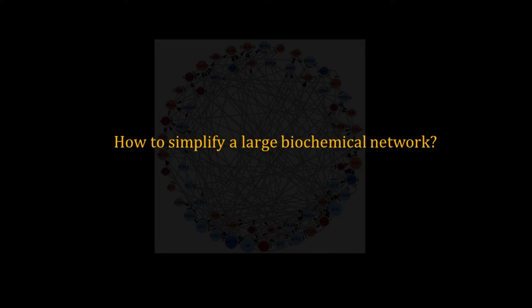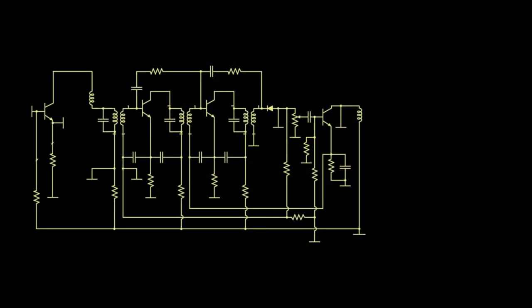That is where we borrow from engineering. Here is an electronic circuit. Though it looks complicated, it is made up of a few components: resistor, capacitor, diodes, etc. If you zoom in, you can break it down into a few smaller circuits like amplifier, rectifier, filters. Each of these circuits have unique input-output behavior.